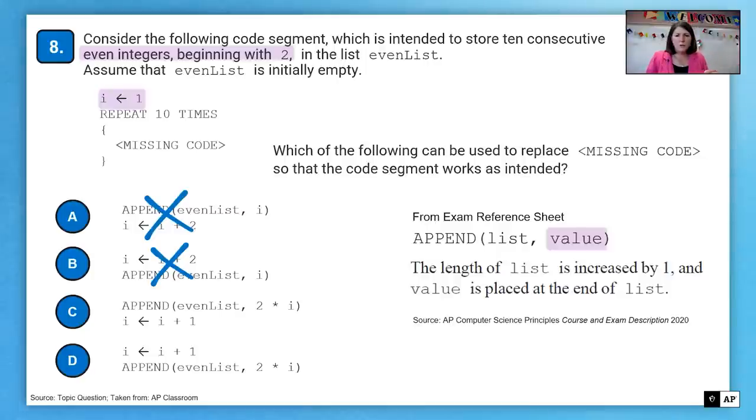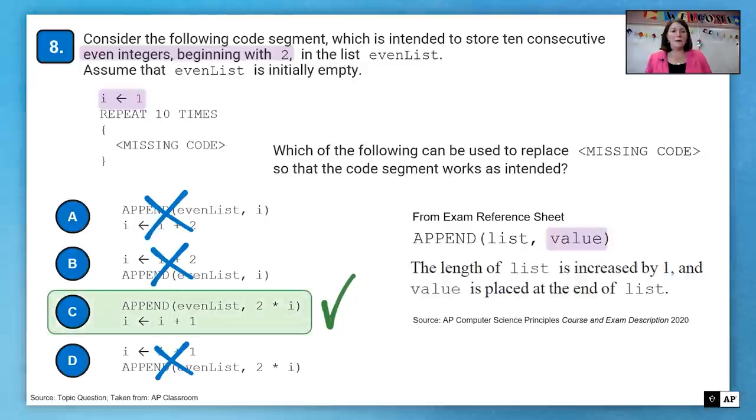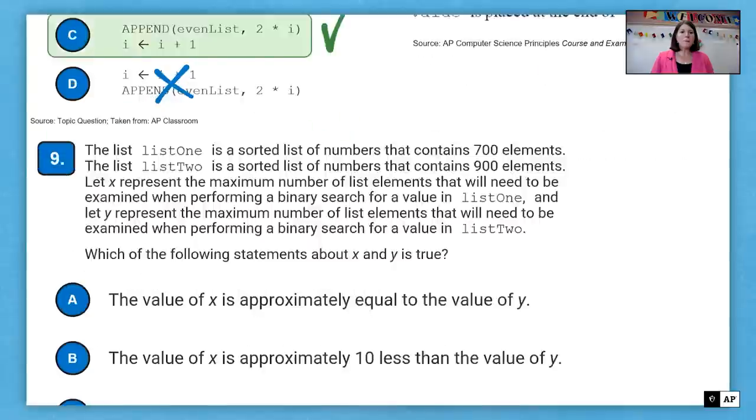And then in B that I just did, I would be three. So clearly A and B appended one and three, not what we want. On C, it looks to be correct because it appends two times I, which would be two, and then it adds to I. On D, it adds to I first, which makes I two and then takes two times I. So that would make it four. So that one doesn't seem to be correct either. So I think our correct answer there is C, where we append two and then we add one to the I.